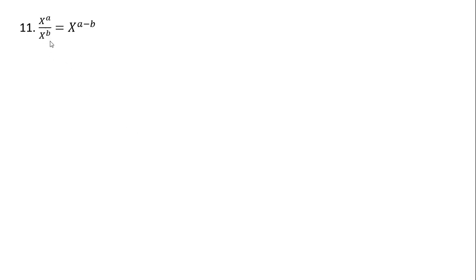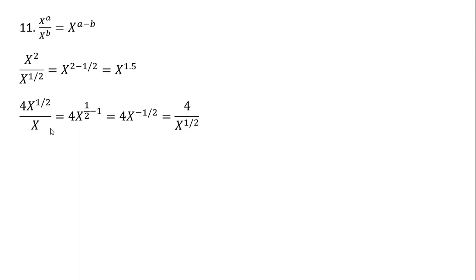Rule 11: x raised to the power of a divided by x raised to the power of b simplifies down to x raised to the a minus b power. An example will simply equal x to the 1.5. Another example: following this rule, we have 4x where x is raised to the 1 half minus 1, so 1 half minus 1 leaves x raised to the minus 1 half. Then we get rid of this negative exponent by moving that x into the denominator. And another example simplifies to x divided by y squared.